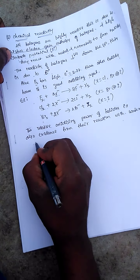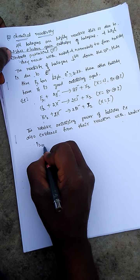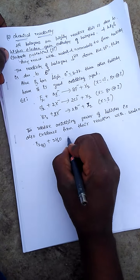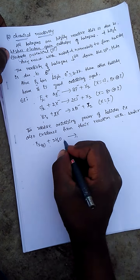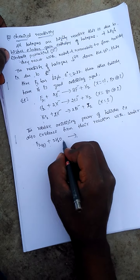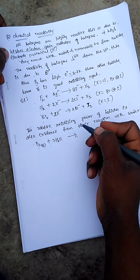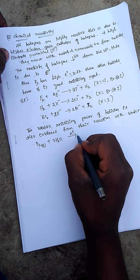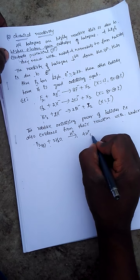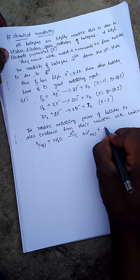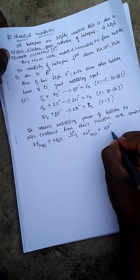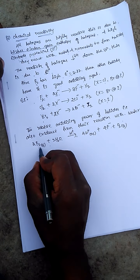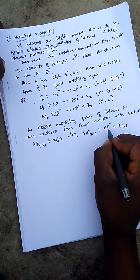Fluorine gas reacts with water and oxidizes water to oxygen in acidic medium: 2F2 + 2H2O → 4H⁺ + 4F⁻ + O2 gas. Observe: fluorine oxidizes water to oxygen.